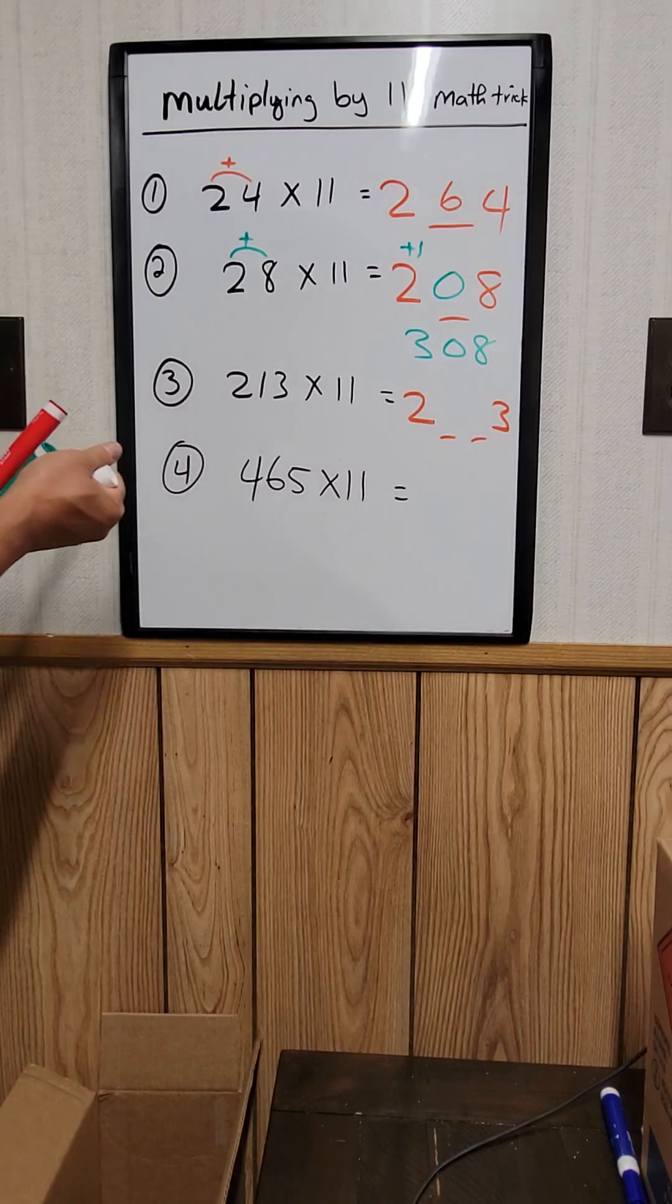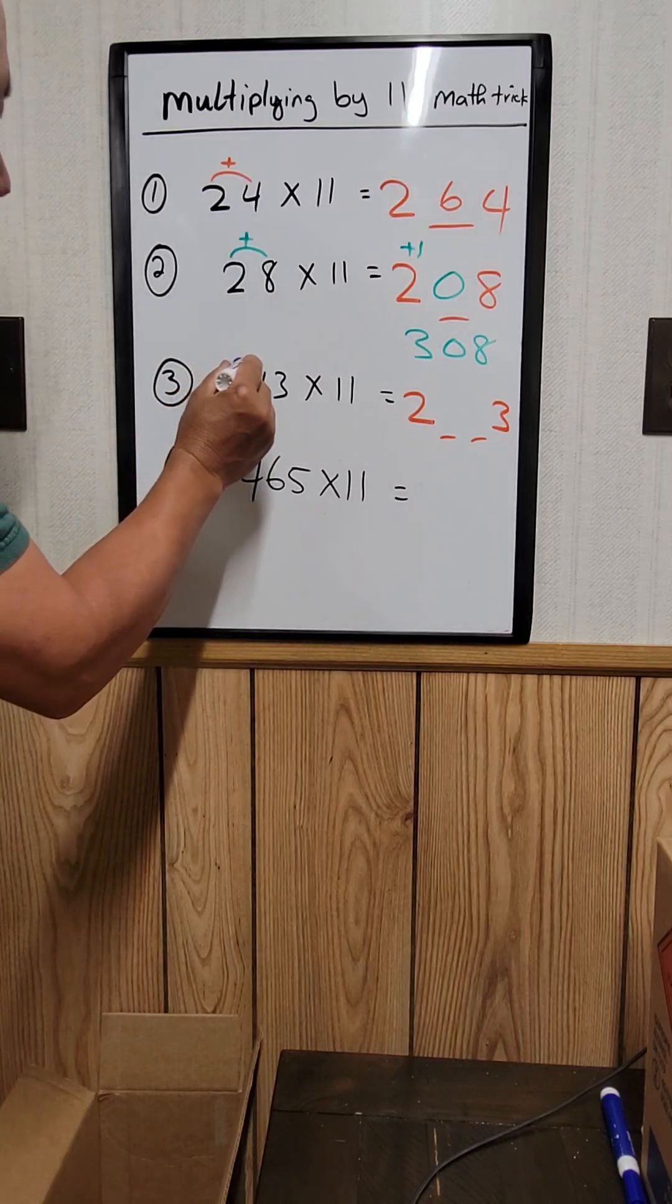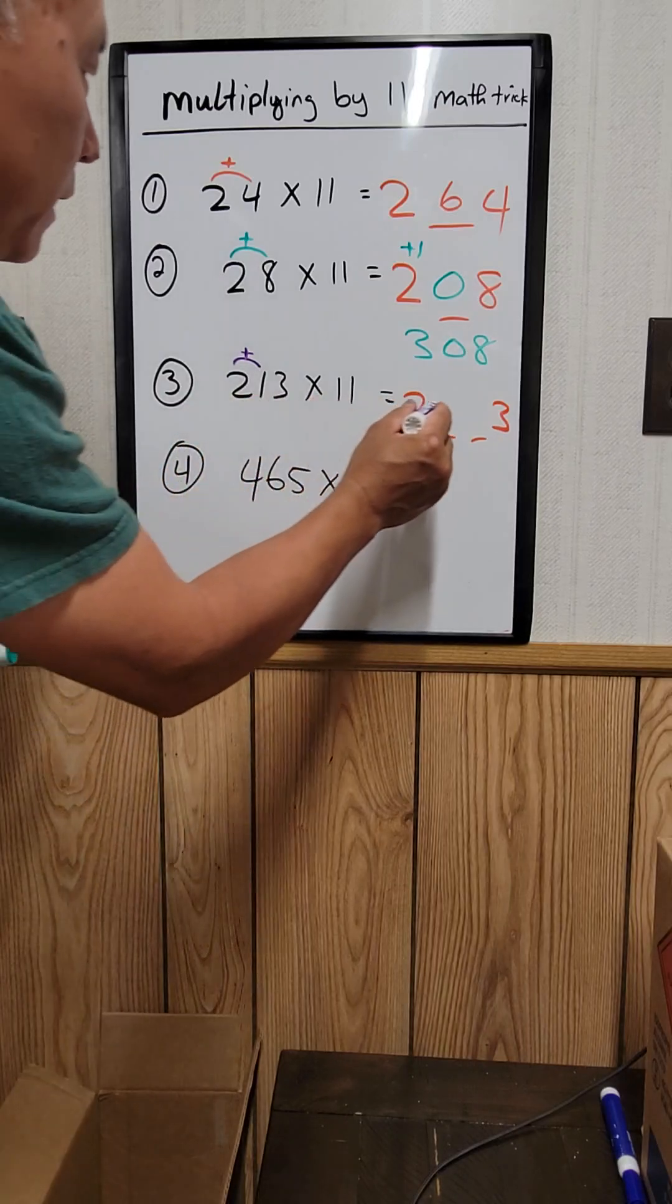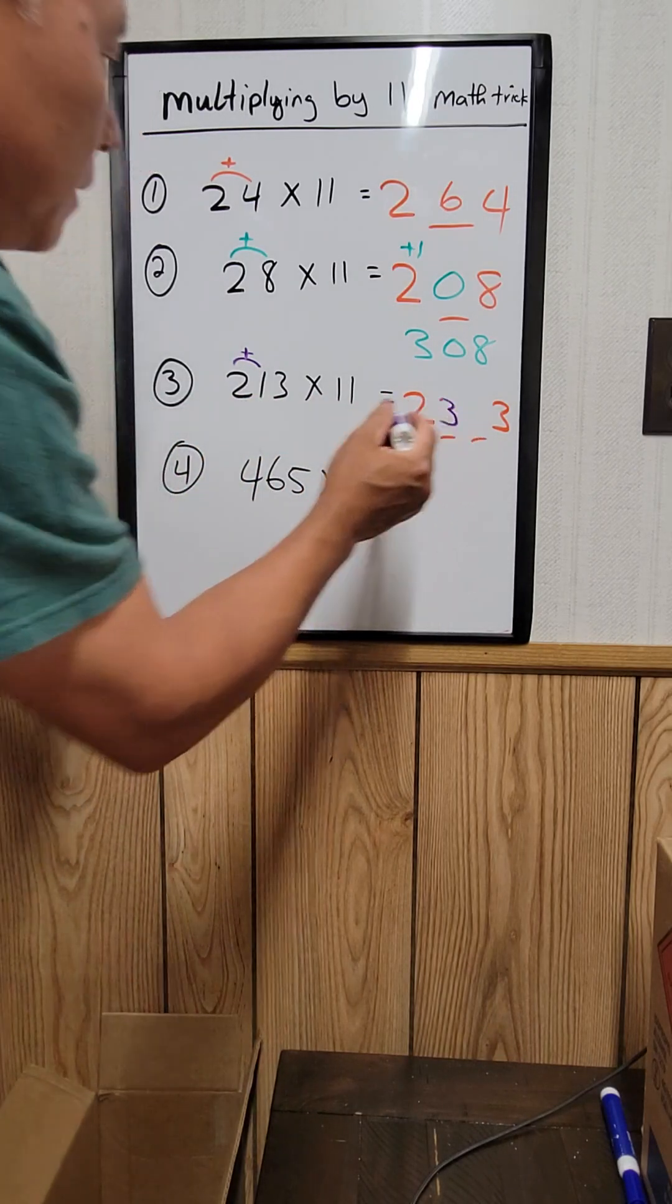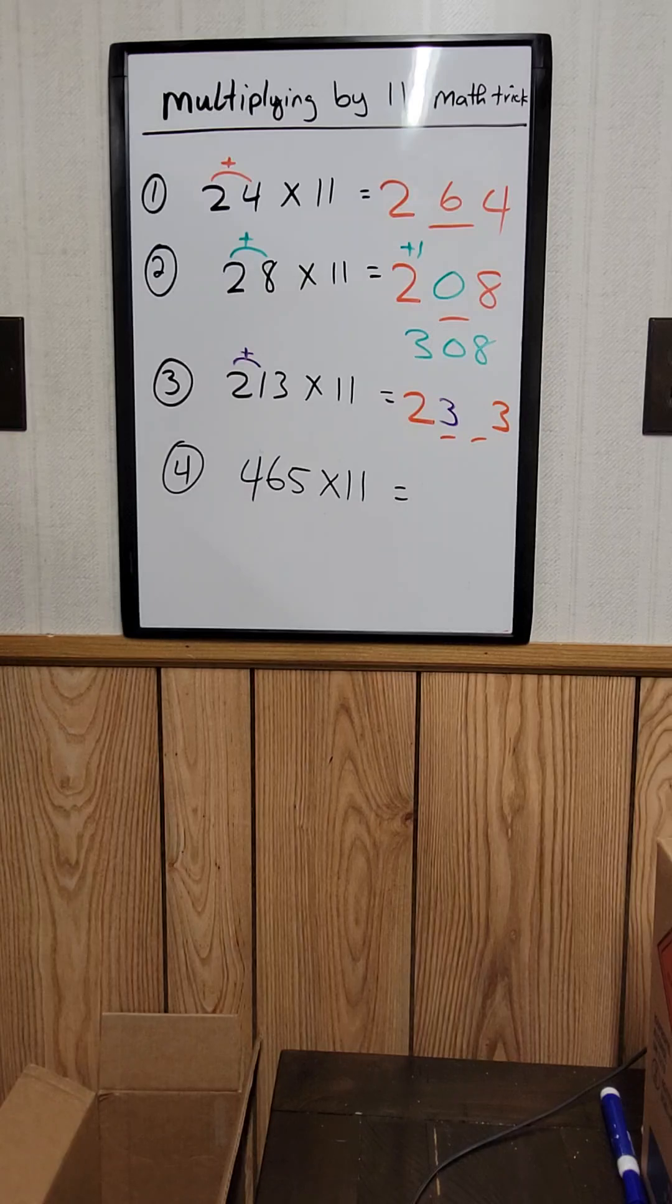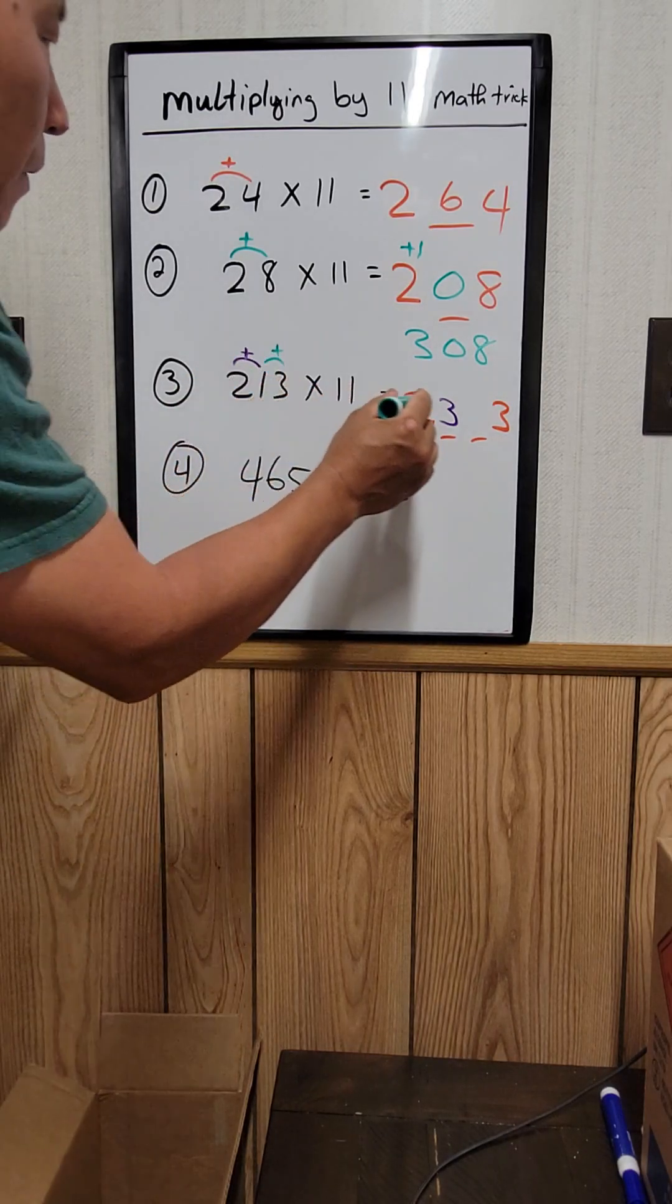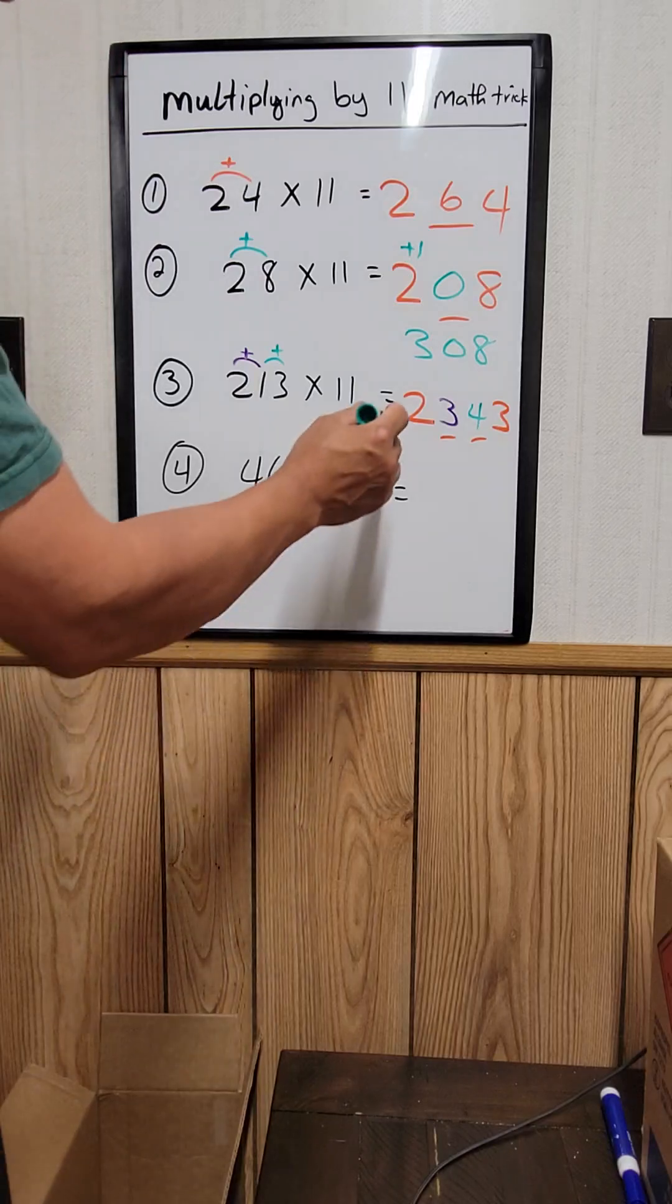You need to do it, just add this 2 up right here. So 2 plus 1 is 3. That's it. 2 plus 1 is 3. And this one, 1 plus 3 is 4. So the answer is 2343.